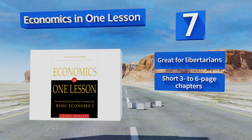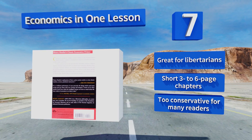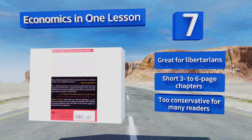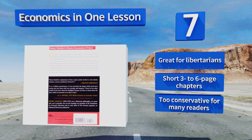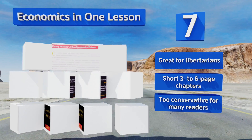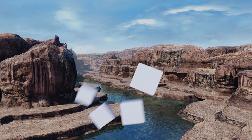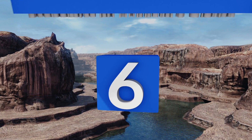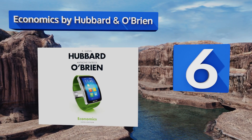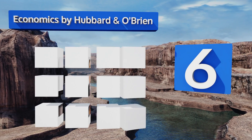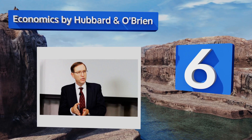This one's great for libertarians and comprises short three- to six-page chapters, but it's too conservative for many readers. Moving up our list to number 6, the sixth edition of Economics by Hubbard and O'Brien is a thorough enough book to carry an undergrad through two semesters of classes.